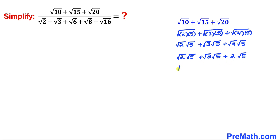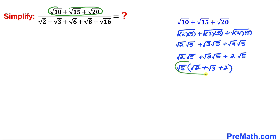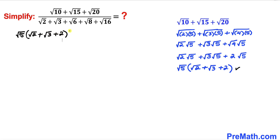So I factor out √5, leaving inside the parentheses √2 plus √3 plus 2. Our numerator has been simplified to √5 times (√2 + √3 + 2).